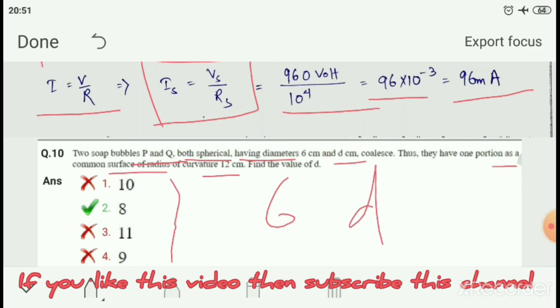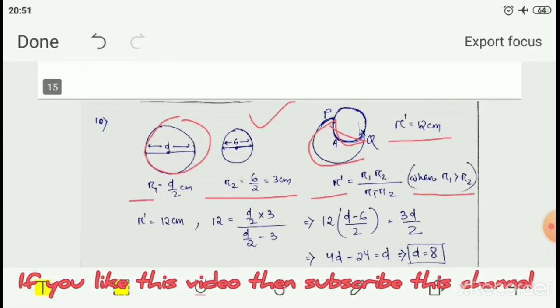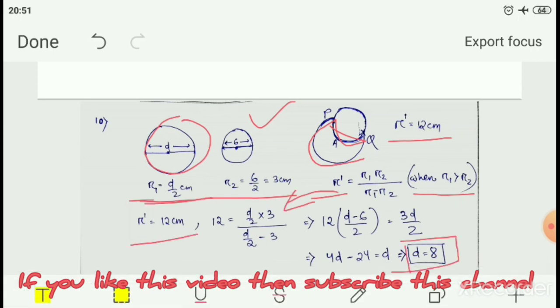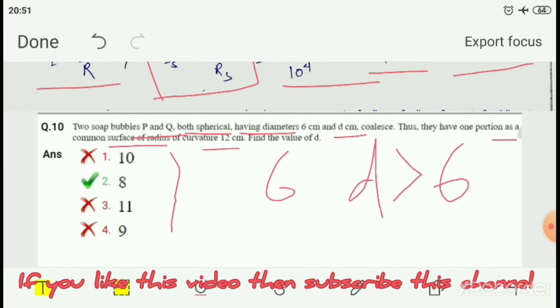We take R1 as D by 2. Since D is the diameter, we need radius. Given radius is 12 cm, putting values in the formula: 12 equals (D/2 times 3) divided by (D/2 minus 3). Solving this equation: 12 equals 3D by (D minus 6). This gives 4D minus 24 equals D, therefore D equals 8, which is option number 2 and is correct.